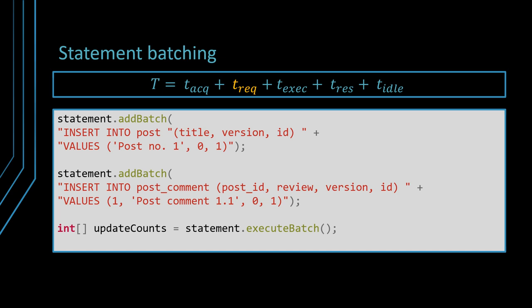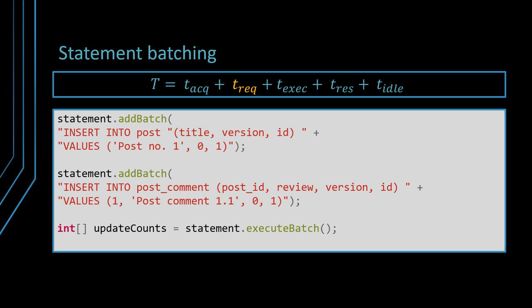For executing static SQL statements, JDBC defines the Statement interface, which supports batching as illustrated by the following example. The addBatch method is used to enqueue multiple statements at the JDBC driver level. The executeBatch method flushes the pending batch statements and sends them to the database in a single request. The number of database rows affected by each statement is included in the integer array returned by executeBatch.